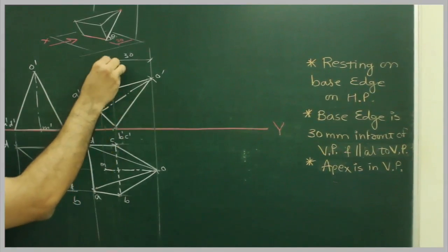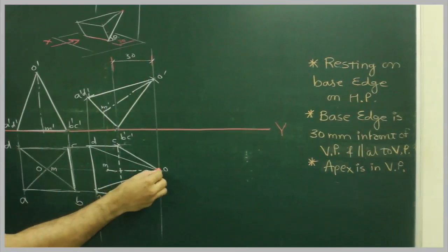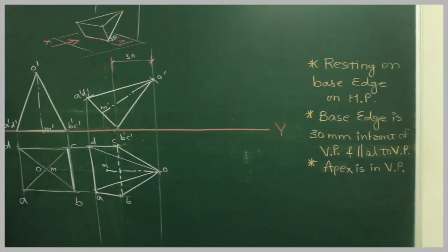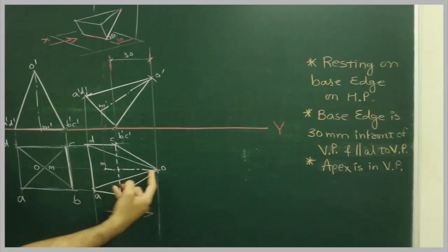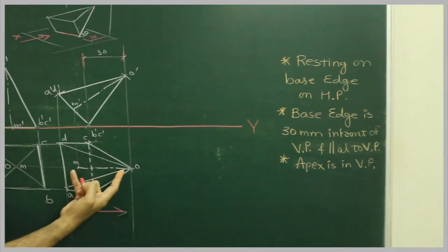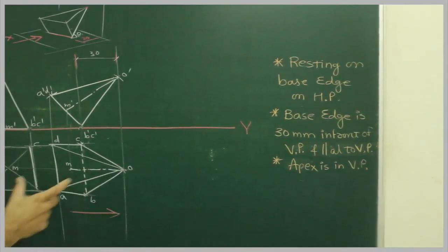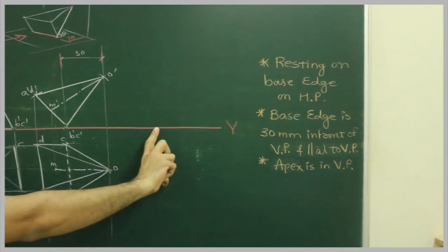Now what we need to do? This is 30, and they want the apex in VP. So what? This diagram we will draw this way. So you can take this. We take this diagram and we will draw it over here.